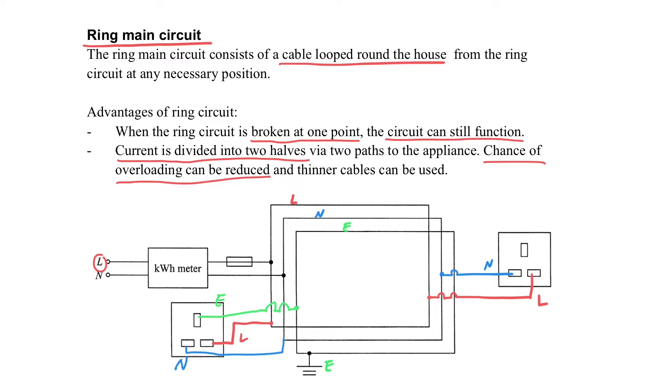At this moment, you may still be wondering what is the meaning of current is divided into two halves. Now let's consider this. Supposedly, if we consider the current entered to the ring main, how does it pass to the socket?